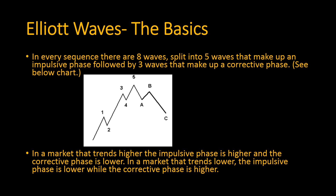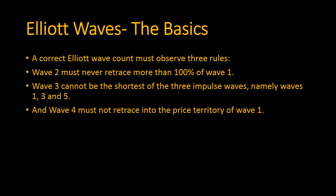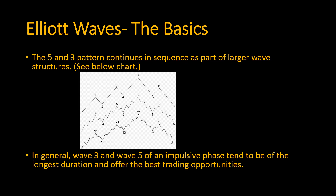In a market that trends lower, the impulsive phase is lower while the corrective phase is higher. A correct wave count must observe three rules: wave two must never retrace more than 100% of wave one; wave three cannot be the shortest of the three impulse waves, namely waves one, three, and five; and wave four must not retrace into the price territory of wave one.